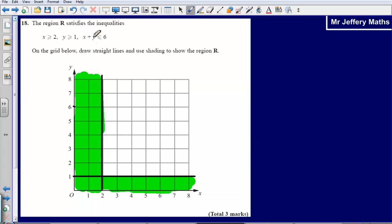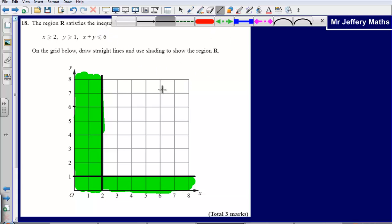Now lastly, I'm told that x plus y, my answer for x plus y has to be less than or equal to 6. So x plus y less than or equal to 6, well to do this I'm going to have to go first of all to the point at where 6 is.